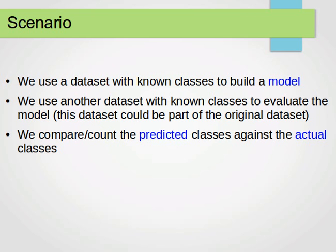Let's remind ourselves of the scenario we explained before — the holdout method and the cross-validation. When we build a classifier, we have a dataset with known classes — for example, the weather dataset we've seen previously. We use another dataset with known classes to evaluate the model, and maybe we can split this one into two or three parts as we learned in the last video.